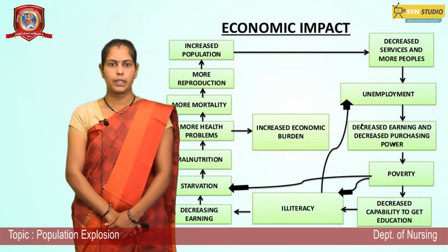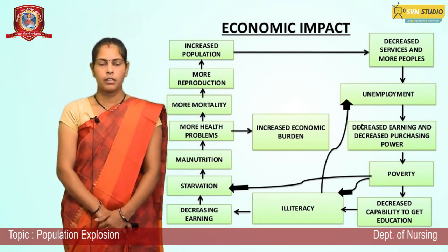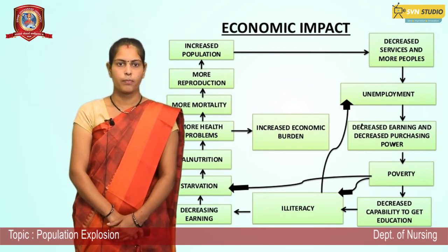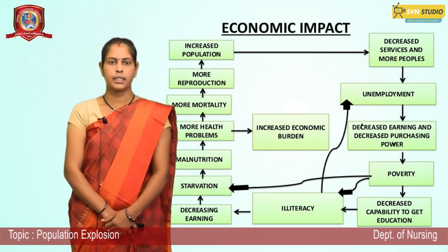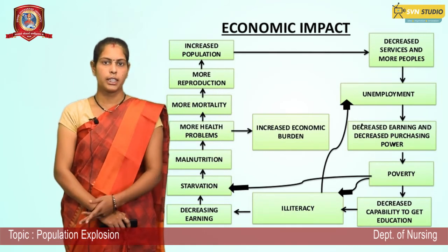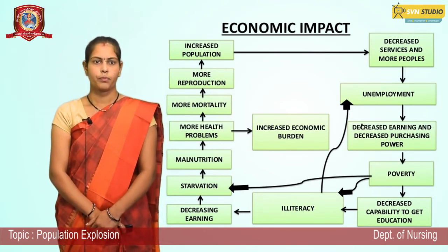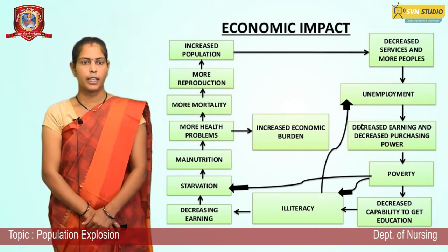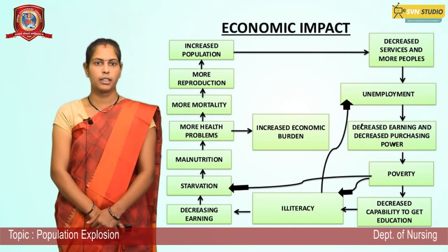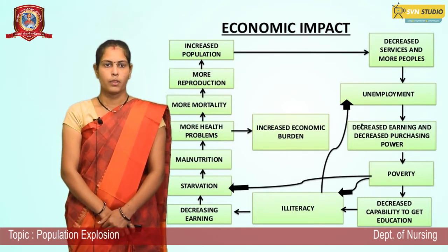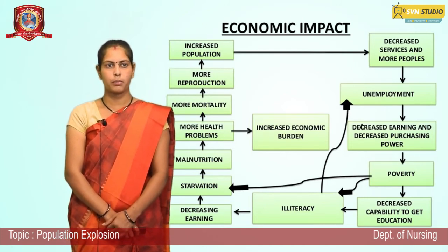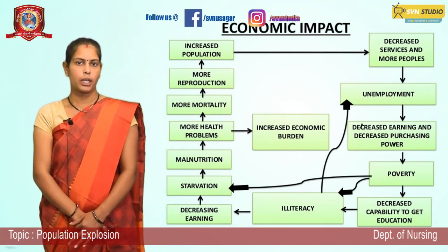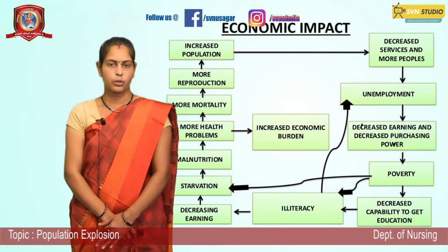Decreased capability to get education — unemployment is linked to illiteracy and lack of knowledge. Decreasing earnings result from illiteracy. Starvation, food problems, and malnutrition follow — food problems cause malnutrition. Nutrition-related diseases arise, including anemia. More health problems develop because nutrition is not provided to people.